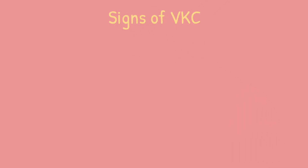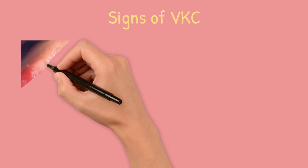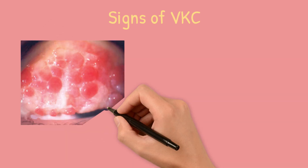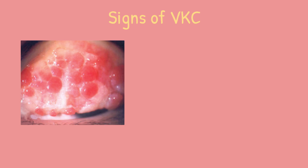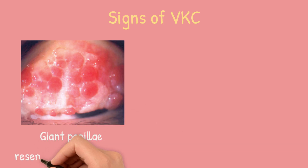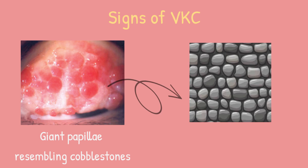Distinctive vernal keratoconjunctivitis signs typically appear in two forms. The first is palpebral vernal keratoconjunctivitis, which is associated with diffuse papillary hypertrophy that is more prominent on the tarsal conjunctiva of the upper eyelid. In more severe cases, giant papillae resembling cobblestones can develop.